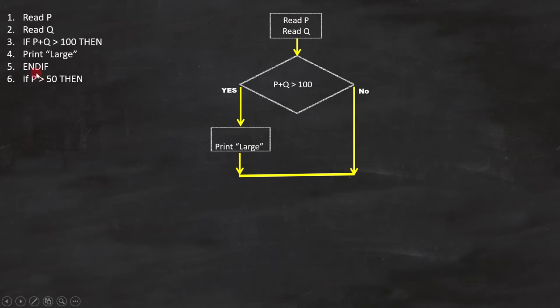Line 6 is, if P is greater than 50, this is a condition and it is represented like this. Line 7 is print P large, and we can represent it like this. And 8th line is end if, so we just have to close the condition now.